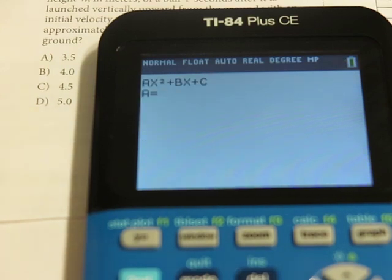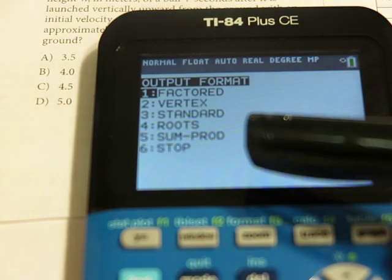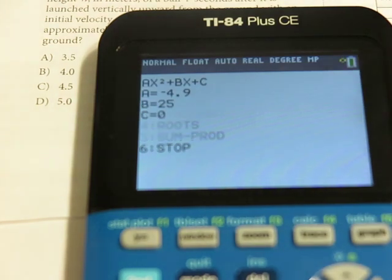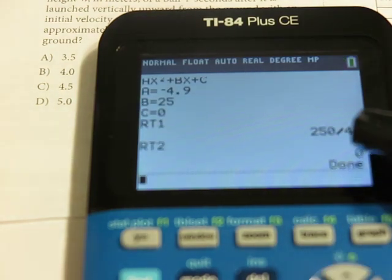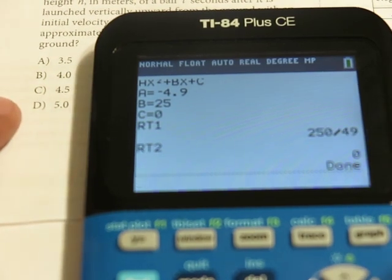It's in standard form, so I'm going to enter it. And now, I'm allowed to enter decimal coefficients or fractions, and then the B term will be 25. The C term will be 0. Now, we're just going to choose option 4. So, option 4 is the root. So, it tells you 250 over 49. So if you divided 250 by 49, that would be about 5.1. So the answer for this one would be choice D.